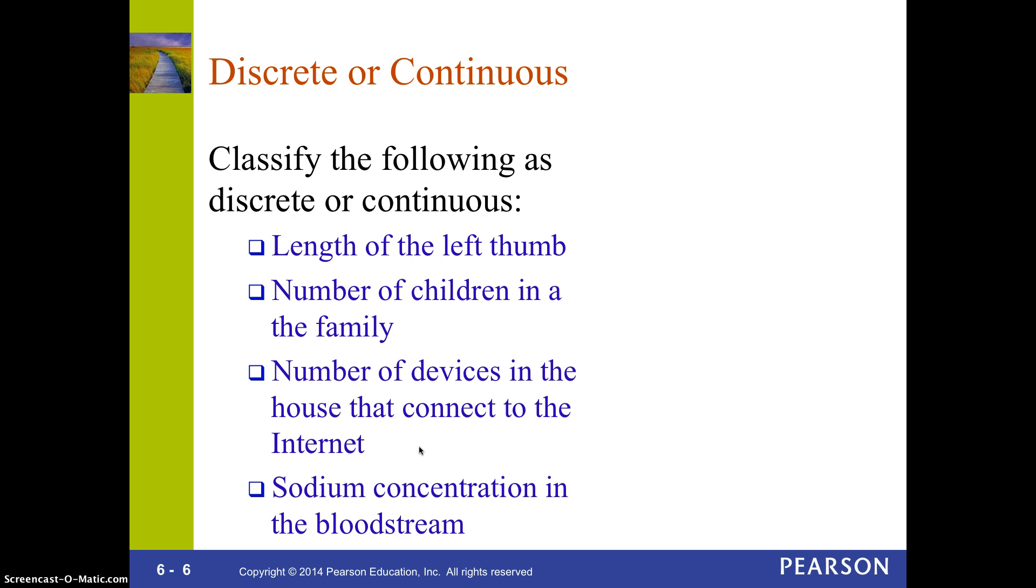So, the length of your thumb is similar to your weight. As in, you can measure it, but you're actually, when you get done, you're rounding it off to a certain length, probably to the nearest half or quarter of an inch or so. So, your length of your thumb is actually going to be a continuous variable because it can take on any value in there. But, if you talk about the number of children in your family, that's going to be discrete because you can't have like half a child. It's either going to be one, two, three, or four.